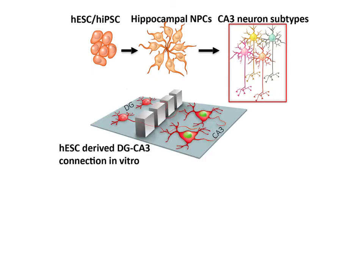These CA3 neurons exhibit characteristics of neuronal network maturation and form synaptic connections with stem cell-derived dentate granule neurons in vitro, recapitulating the neuronal connectivity within the hippocampus.